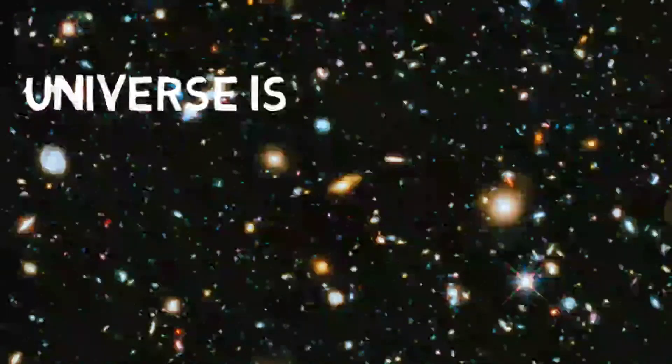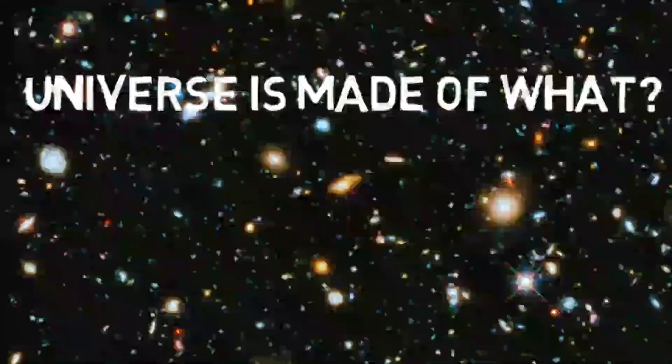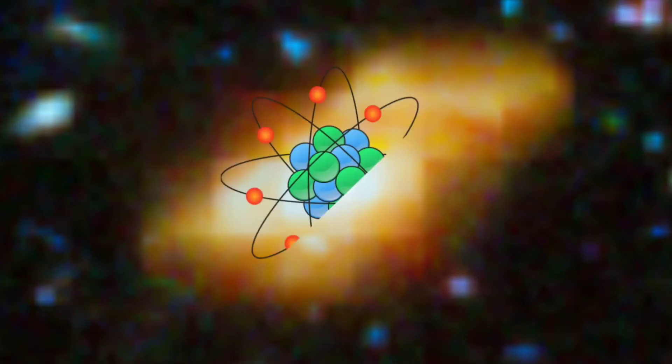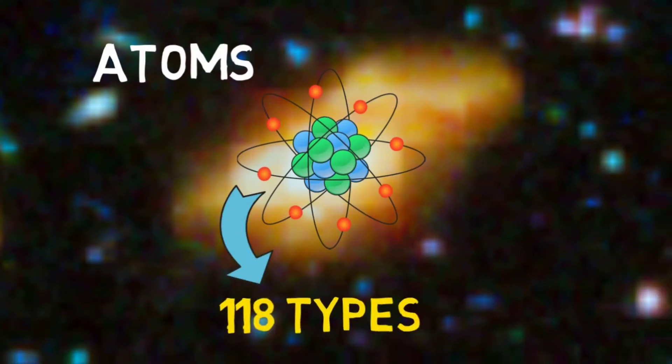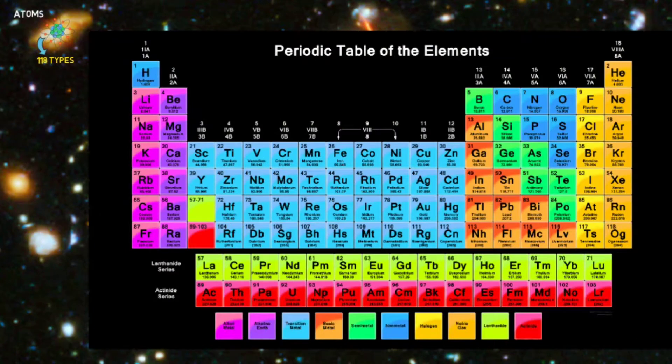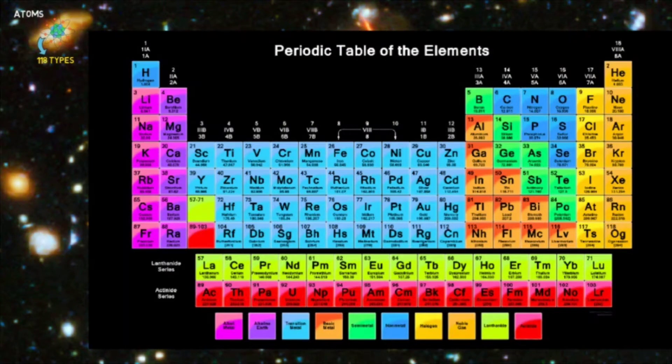In our universe, we can't answer many questions, but understanding atoms doesn't have to be difficult. There are 118 atoms that we have organized into a single chart called the Periodic Table.